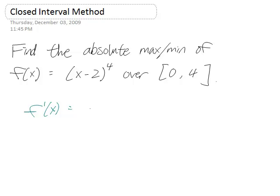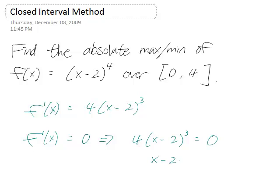We take the derivative using the chain rule. That's 4(x-2)^3. Then we set f'(x) equal to 0. That means x-2 equals 0. You can divide both sides by 4 and take the cube root, so x equals 2.